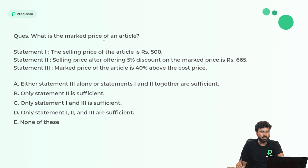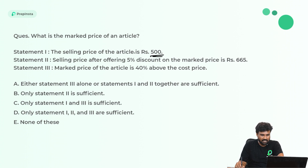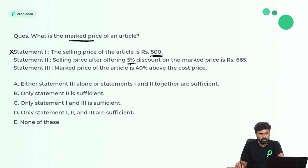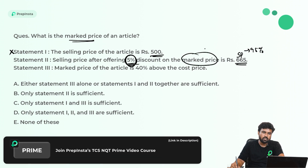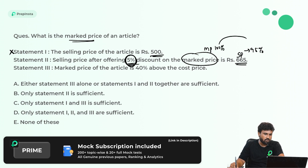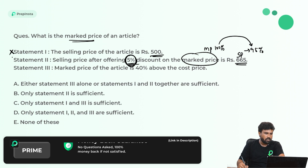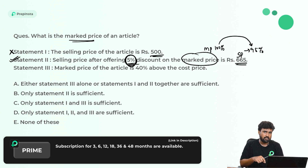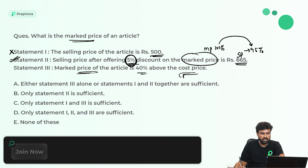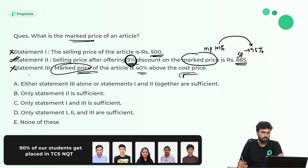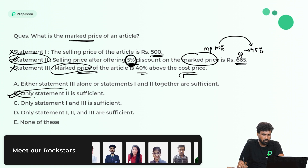What is the market price of an article? Statement 1: the selling price of the article is given — but from selling price alone you can't find market price directly, so Statement 1 alone is not sufficient. Statement 2: selling price after offering 5% discount on market price is 665 rupees. Here SP = 665 = 95% of market price, so you can find market price. Statement 2 alone is sufficient. Statement 3: market price is 40% above cost price — without knowing cost price, we can't find market price. Only Statement 2 is sufficient — Option B.